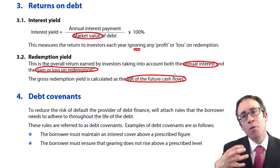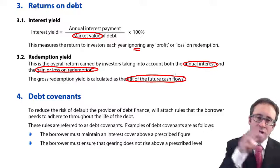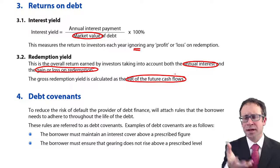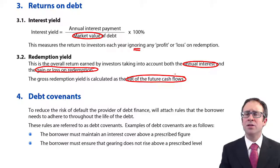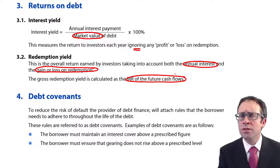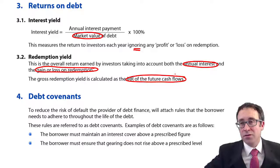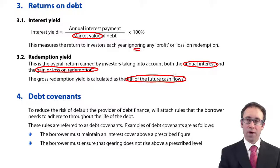I can't see redeemable debentures being examined again in the same way, but what you might find is the gross redemption yield examined on a convertible debenture. As part of your weighted average cost of capital calculations in F2, your WACC calculations may have included convertible debentures. You need to work out the IRR of the cash flows to find the gross redemption yield — the yield to maturity. I'll cover that in a later video when we look at convertible debentures.